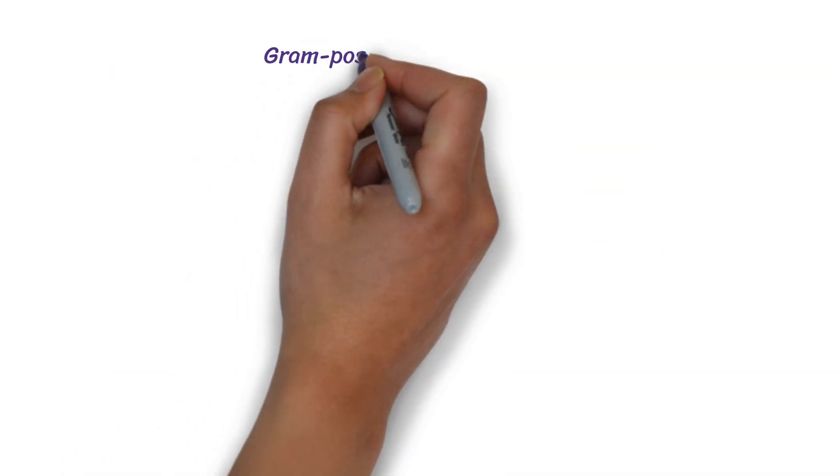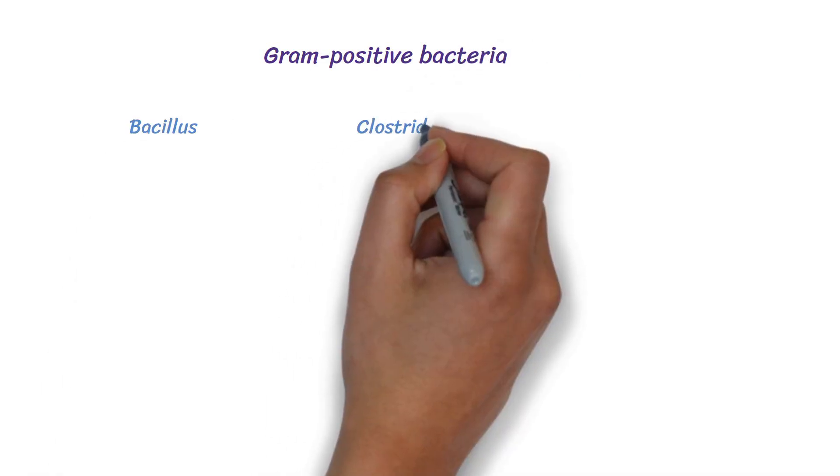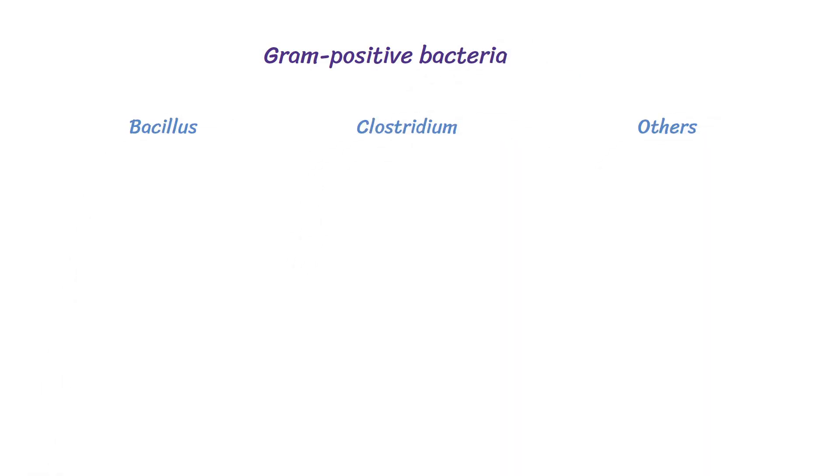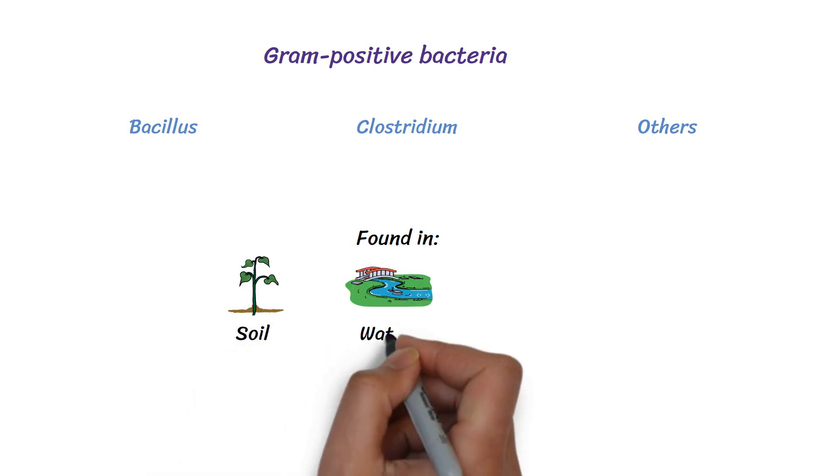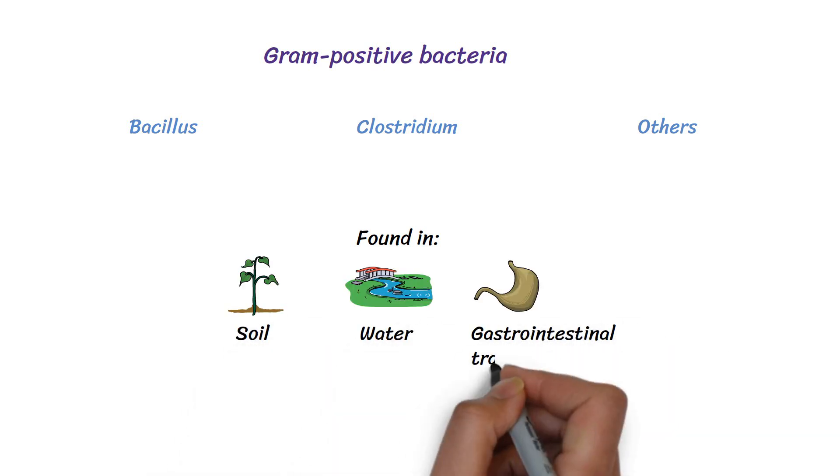Gram-positive bacteria like Bacillus, Clostridium, and a few other genera are known to produce endospores. These bacteria are found in various environments, including soil, water, and the gastrointestinal tracts of animals.